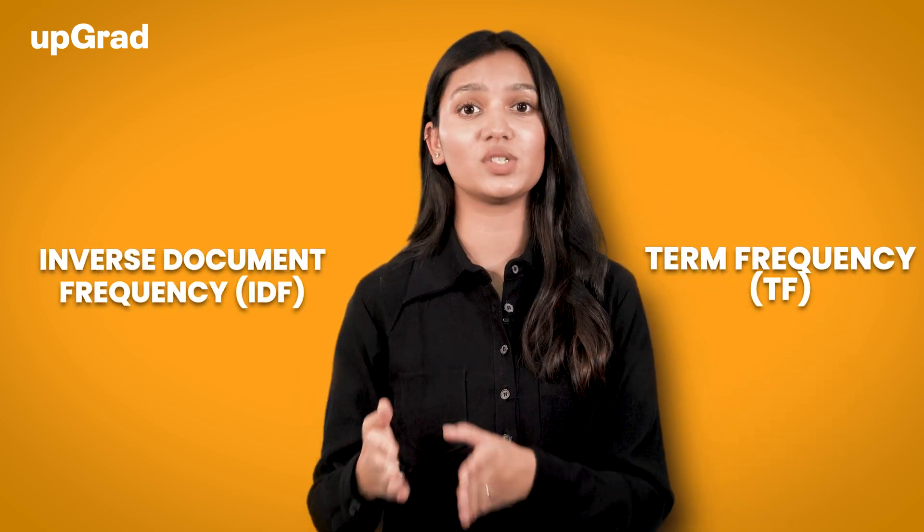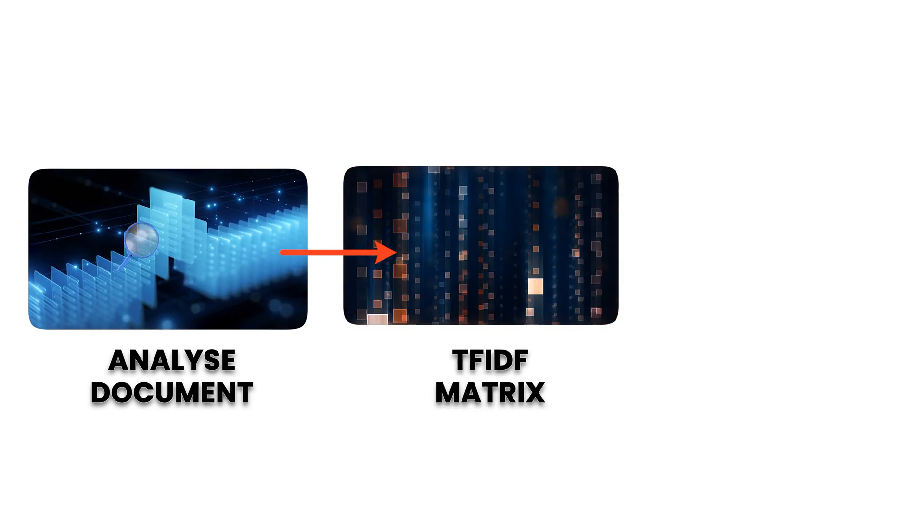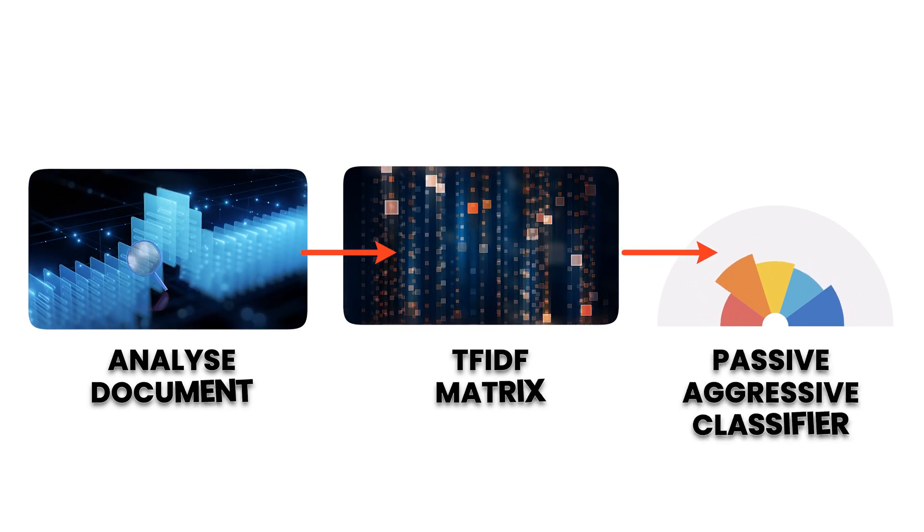You will learn about term frequency (TF) and inverse document frequency (IDF) to analyze word importance in documents. Common words that appear in multiple documents with high frequency are considered less important. The TF-IDF vectorizer analyzes a collection of documents and creates a TF-IDF matrix accordingly. A passive aggressive classifier will remain passive when the classification outcome is correct, but will change aggressively if the outcome is incorrect. It's a fascinating project to start with machine learning and text classification.